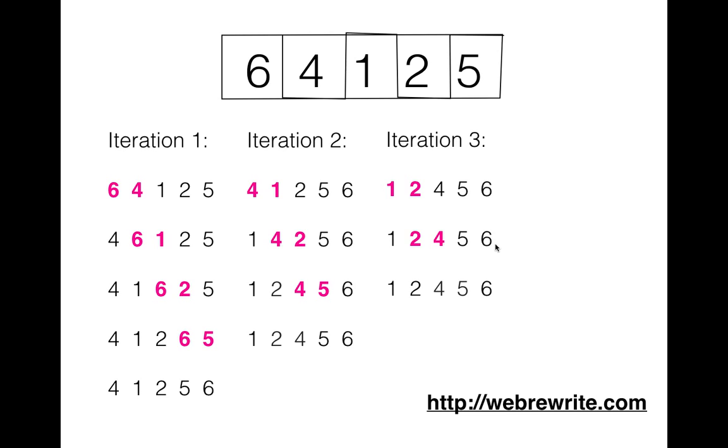In iteration 4, we have only one step in which the first two elements are compared. They are already sorted. In this way bubble sort works, and in this way we sort the elements in bubble sort. We have discussed the algorithm; let's move to the programming part in which we implement this algorithm in Java.